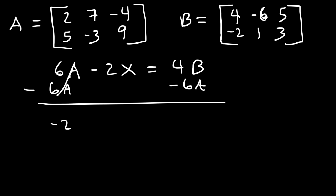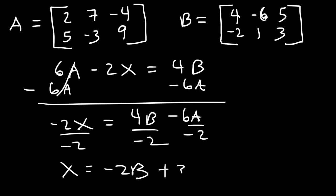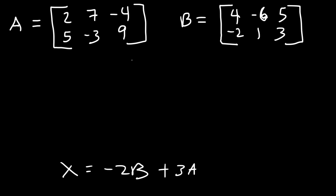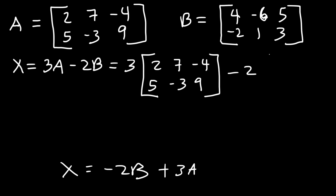And so we can see that -2X equals 4B minus 6A. And then let's divide every term by -2. So X is going to equal 4 divided by -2 is -2, -6 divided by -2 is positive 3. So I'm going to reverse 3A and -2B. So matrix X equals 3A minus 2B, and so that's going to be 3 times matrix A minus 2 times matrix B.